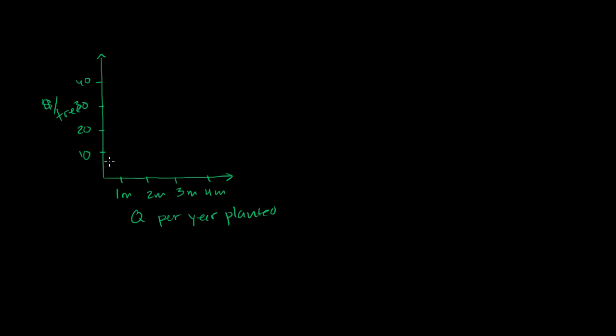And our marginal cost curve or our supply curve would look just to even get that first tree planted, to get someone to plant it and grow it and then replant it in your garden. You're going to have to pay them at least $10. And then each incremental tree is going to get a little bit more expensive. And so our marginal cost curve will look something like that. That's our marginal cost or our supply curve.